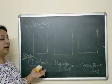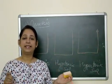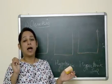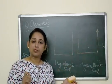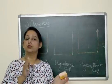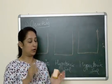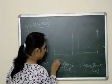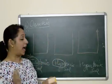Isotonic solution: iso means same — the solution has the same concentration as the cell, so there is no change. Hypotonic solution: hypo means less. A hypotonic solution has less solute and more water, which in simple language means it is a dilute solution. It has more water and less solutes.